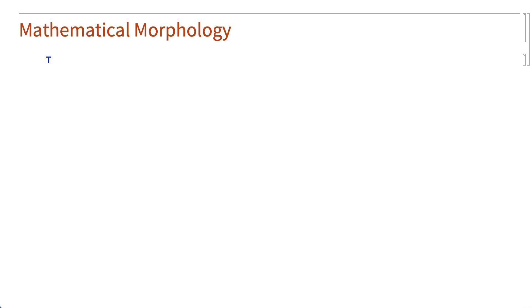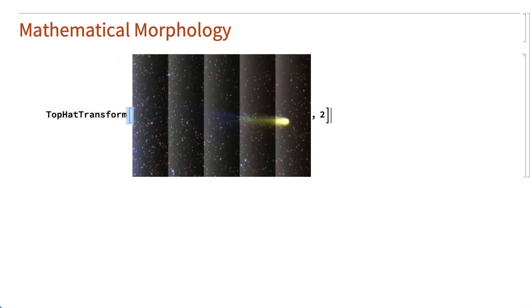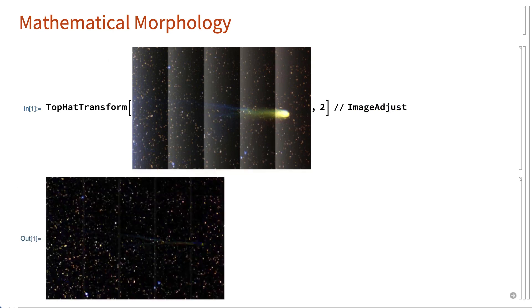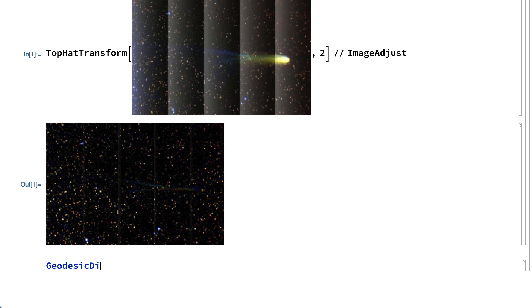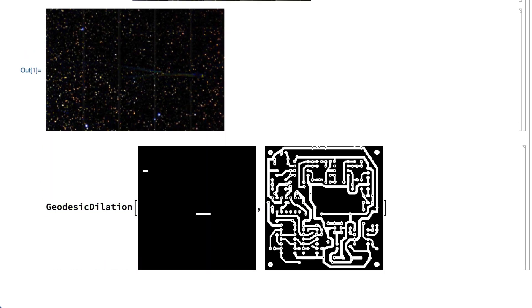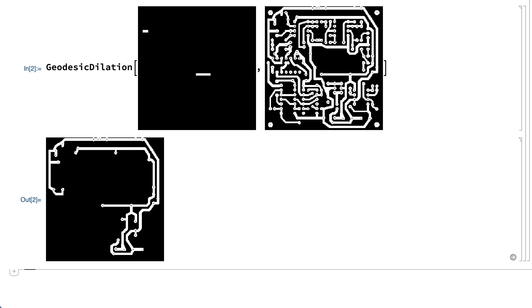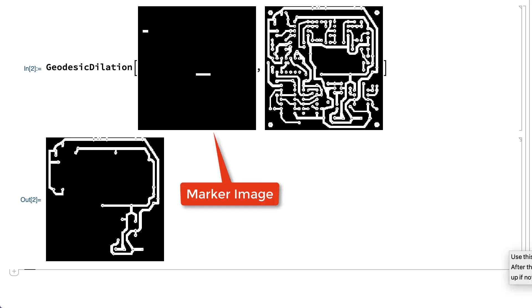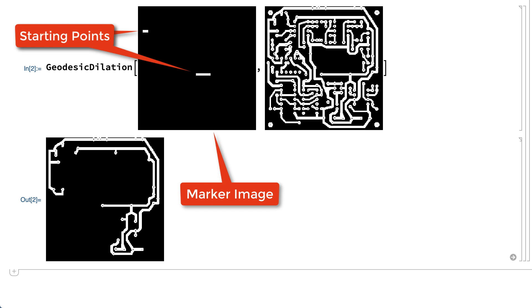Section 12 describes a diverse class of operations that use ideas from mathematical morphology, which typically means that these operations work by considering relationships between neighboring locations in an image. For example, this shows a morphological operation called a top hat transform used to remove the large features and the variation in background shading from an image, emphasizing the finer details of the original image. This shows another morphological operation called geodesic dilation, which is used here to reconstruct two paths through a circuit based on a marker image that identifies starting points on those two paths.